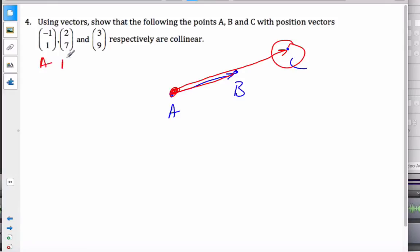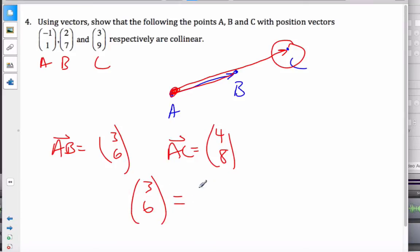If this is A, B, and C, vector AB is equal to head minus tail. So that's equal to (3, 6). AC is (4, 8). And we can clearly see that (3, 6) is equal to, or parallel to rather, (4, 8). Since they both simplify to (1, 2), they are parallel. Therefore, A, B, and C are collinear.